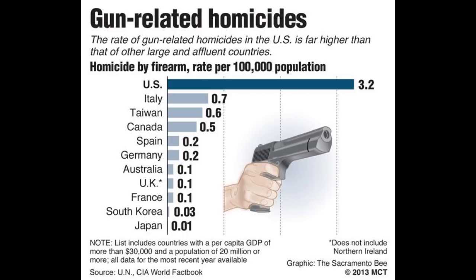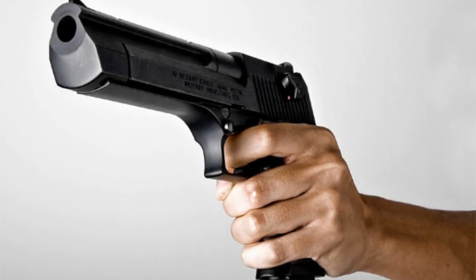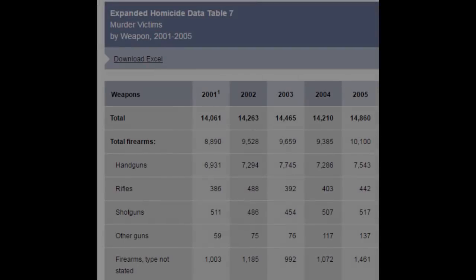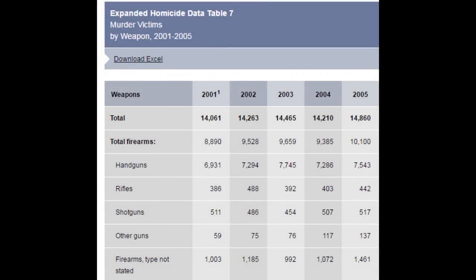But would an assault weapons ban achieve this goal? Gun-related deaths are most often committed using a handgun, not an assault weapon. In 2005, 75% of the 10,100 homicides committed using firearms in the United States were committed using handguns, compared to 4% with rifles and 5% with shotguns.